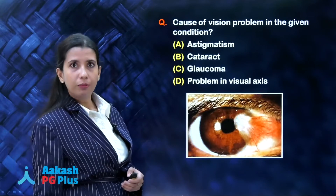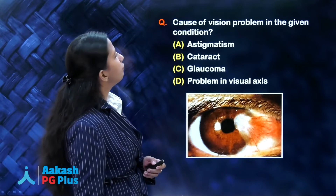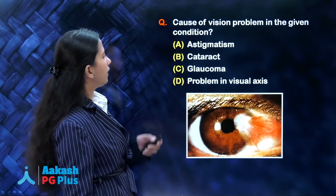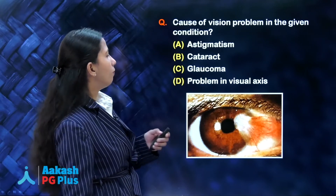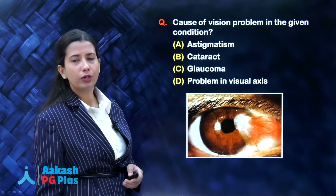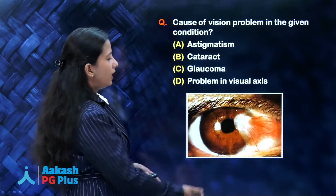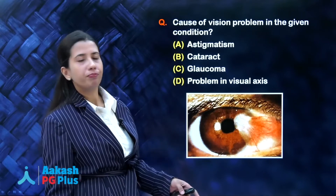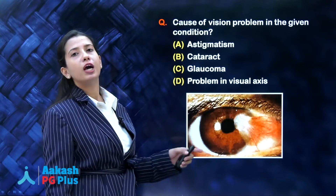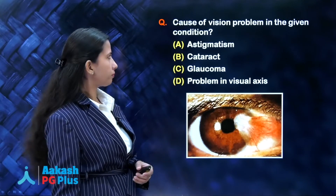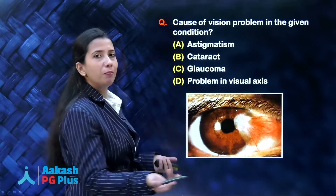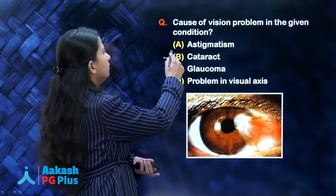Question number 3: causes of vision problem in the given condition — astigmatism, cataract, glaucoma, or problem in the visual axis? You can solve this question by just seeing the image — this is a case of pterygium, a wing-shaped fold of conjunctiva encroaching upon the cornea. Do you see cataract? No, the pupil is perfectly black, so cataract is out.